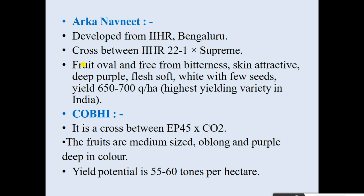The variety Arka Anand, developed by IIHR Bangalore, is a cross between IIHR 22-1 × Supreme. Its fruits are oval, free from bitterness, with attractive deep purple skin and white flesh with few seeds. Yield is 650 to 700 quintals per hectare — the highest yielding variety in India. Another hybrid is COBH-1 (Coimbatore Brinjal Hybrid), a cross between EP45 × CO2, with medium-sized oblong purple fruits and yield potential of 55 to 60 tons per hectare.